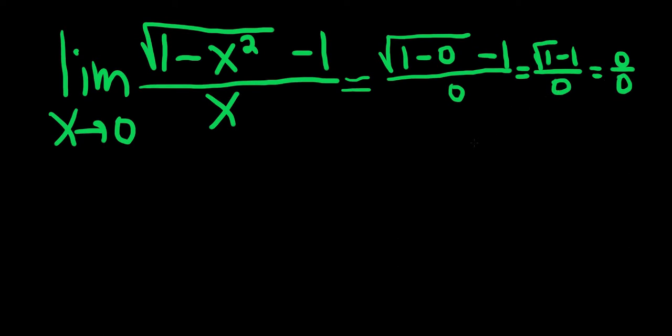This is indeterminate, and this is one of the indeterminate forms that allows us to use L'Hopital's rule. L'Hopital's rule says that when we're taking the limit and we get one of these forms, 0 over 0 or infinity over infinity, we can just take the derivative of each piece.